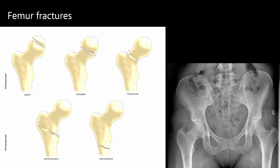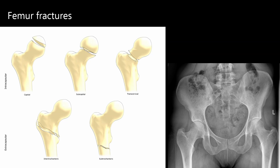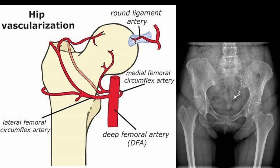Fractures of the femur can be a common finding in hip x-rays. We classify these based on the location of the fracture. Broadly speaking, they can be either intracapsular or extracapsular. The hip joint capsule is a strong, dense collection of ligaments that surround the joint. The edge of the joint capsule runs along the intertrochanteric line, so fractures on this line or below are extracapsular fractures. Differentiating between intra and extracapsular fractures is important as it changes the patient's prognosis and required management. Intracapsular fractures will disrupt the blood supply from the lateral circumflex artery to the femoral head, and as a result, these fractures often cause avascular necrosis.